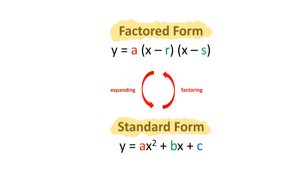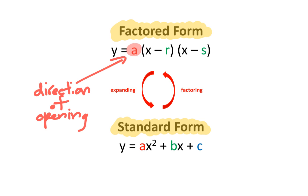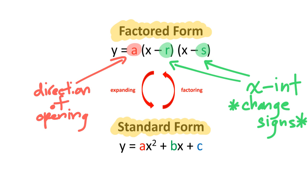In factored form, the variable a tells you the direction of opening — whether the parabola is opening upwards (smiling) or opening downwards (frowning). Meanwhile, the variables r and s are related to the x-intercepts. Remember, you have to change the signs.